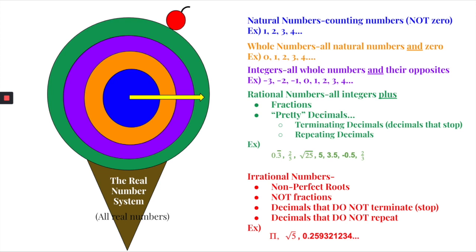As mentioned, if a number is a natural number, it automatically fits into the whole number, integer, and rational number categories — it's going to have multiple characteristics. If it's a whole number, same thing. And integers are also considered rational numbers, so you're going to identify more than one category sometimes.